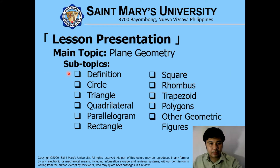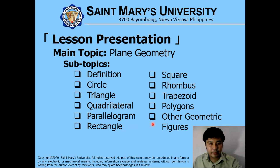Here are our subtopics under plane geometry. We will be discussing definitions about a circle, a triangle, a quadrilateral, parallelogram, rectangle, square, rhombus, trapezoid, polygons, and other geometric figures.